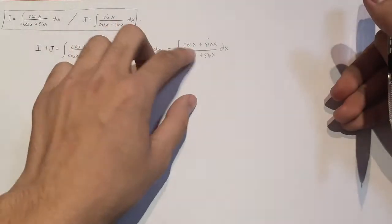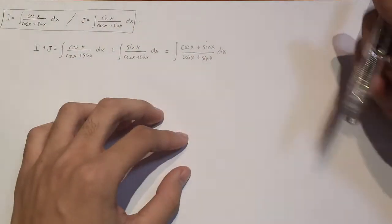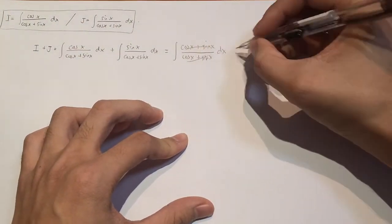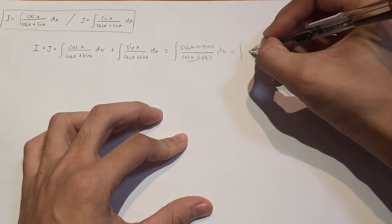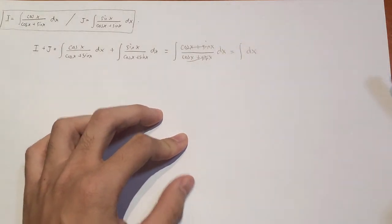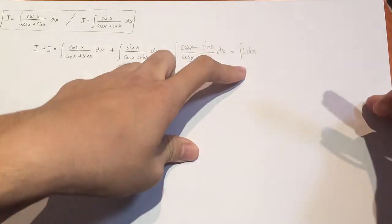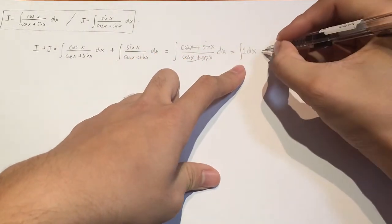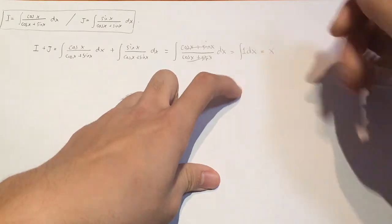And what we get is we'll get cos x plus sin x divided by cos x plus sin x dx. You can check this, it's just simple algebra. But as you can see here, cos x plus sin x on the top and cos x plus sin x on the bottom cancels out. And so what you're left with is just the integral of dx because this is just one, right? And the integral of one with respect to x will just give you x. So that's pretty neat, isn't it?